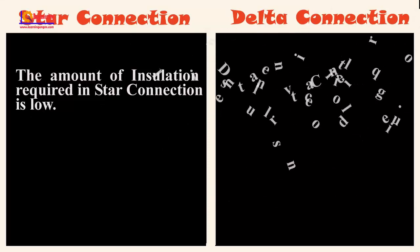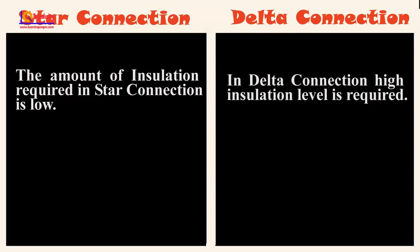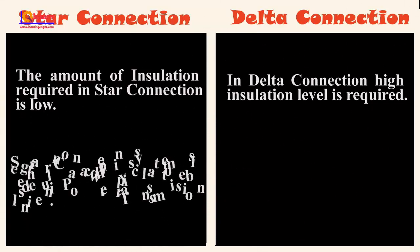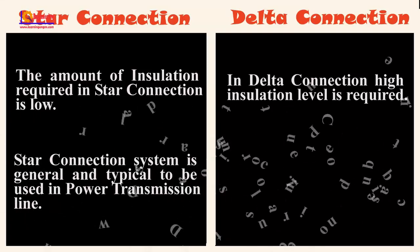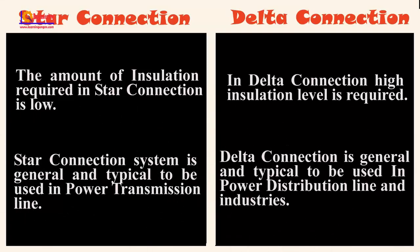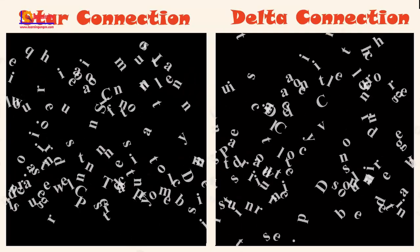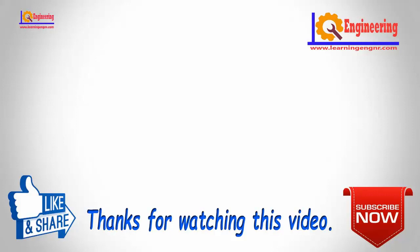The amount of insulation required in star connection is low; in delta connection, a high insulation level is required. Star connection is generally used in power transmission lines, while delta connection is generally used in power distribution lines and industries.